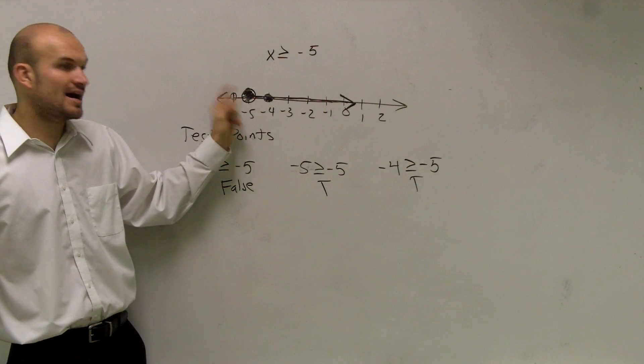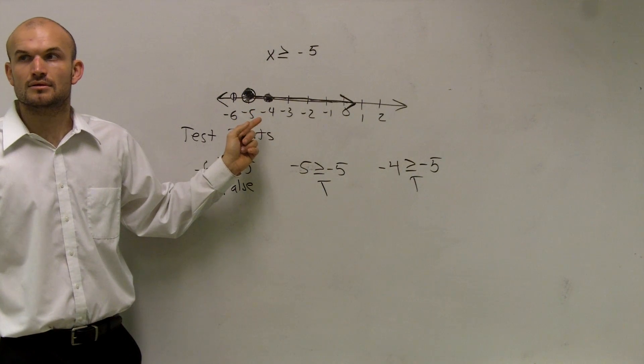And since it was equal to 5, that's why you shade in the big dot. Alright.